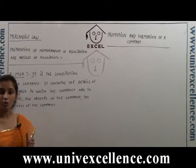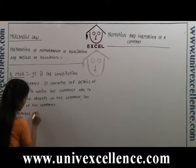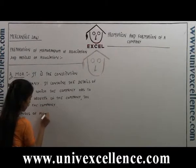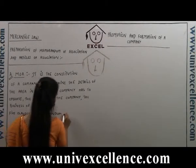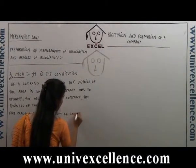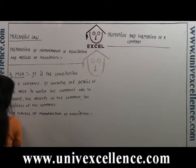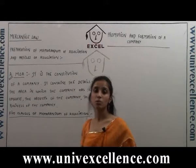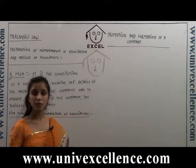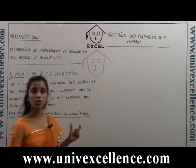The Memorandum of Association has been divided into five clauses. The first clause is the Name Clause. The Name Clause contains the name of the proposed company — the name which has been approved by the Registrar of Companies.